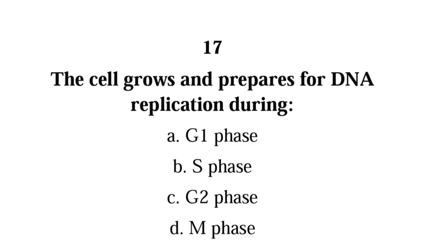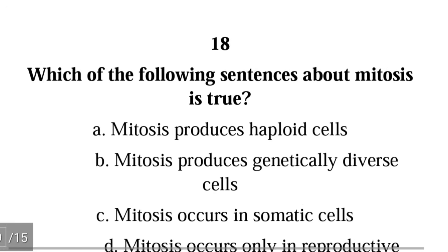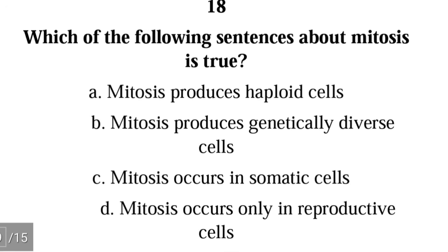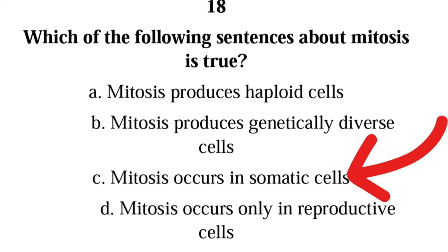Question 18: Which of the following statements about mitosis is true? A) mitosis produces haploid cells, B) mitosis produces genetically diverse cells, C) mitosis occurs in somatic cells, D) mitosis occurs in somatic cells only. The correct answer is C) — mitosis occurs in somatic cells. Mitosis does not produce haploid cells or genetically diverse cells.